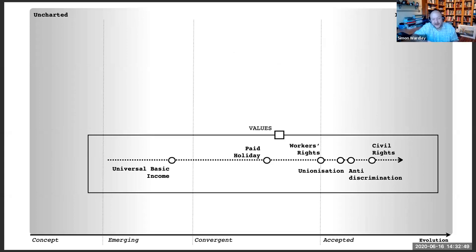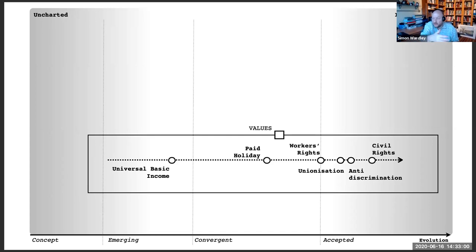I compressed these values down, flattened them, and put a square — that square means a pipeline. When we talk about values, we're talking about a constantly evolving set of beliefs: new concepts appearing, some evolving, some eventually becoming accepted.